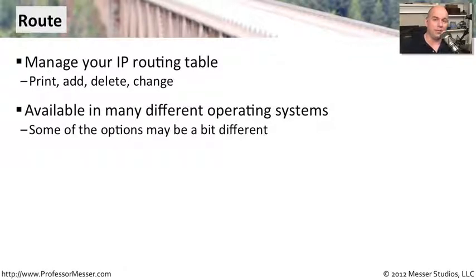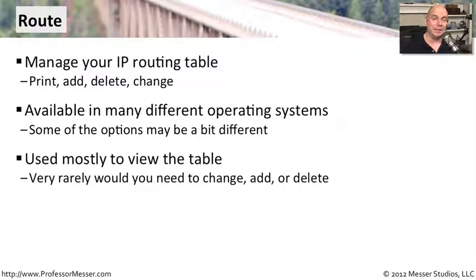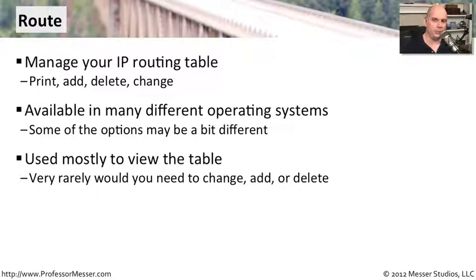The operating system you're using might vary, but the route command, or some derivative of it, is probably what you'll always use to view that table. What you'll most often use is just a view of the routing table — you're troubleshooting a path between two devices and need to understand which direction each hop is taking. When you make a change to a route, that's a significant change, so you want to be very sure what you're doing when you use route commands to delete, add, or change existing routes.